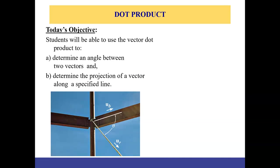The first application is to determine the angle between two vectors. If we have two vectors — one in a given direction and the second along a cable — and we need to know the angle between them, we can do that using dot product.